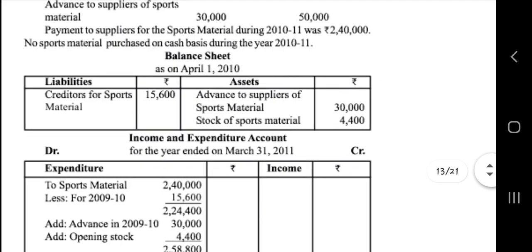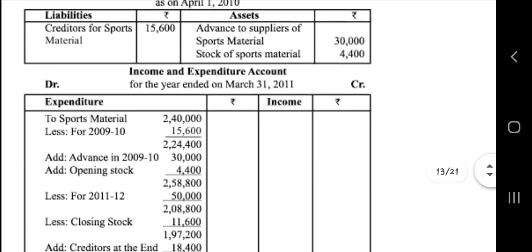Next is the balance sheet. In this, credit of sports material is 15,000, advance to 4,400.